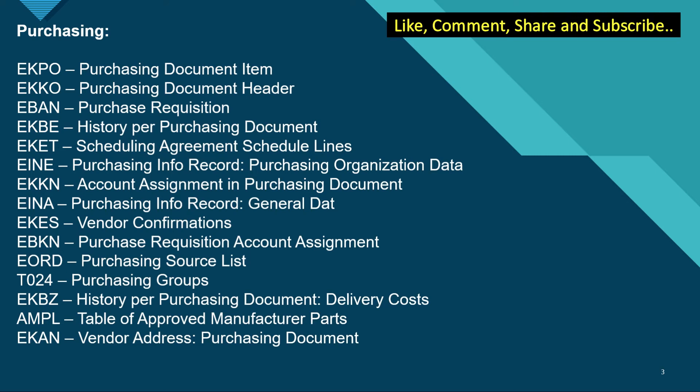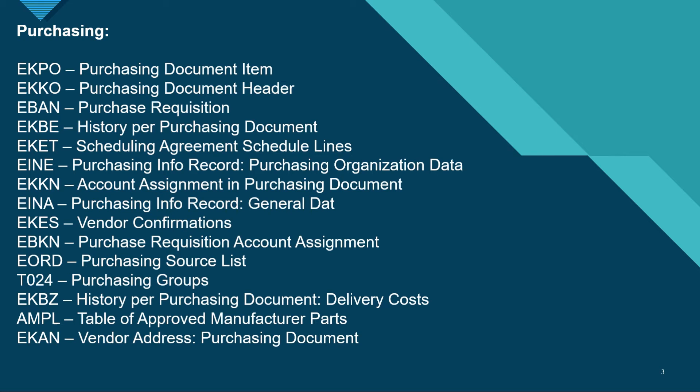Now talking about purchasing, these are some of the very important tables that you should remember. EKPO has the purchasing document item level data. EKKO has the purchasing document header data. EBAN is for purchase requisition. EKBE is the purchase order history details. EKET has the scheduling agreement schedule lines data.